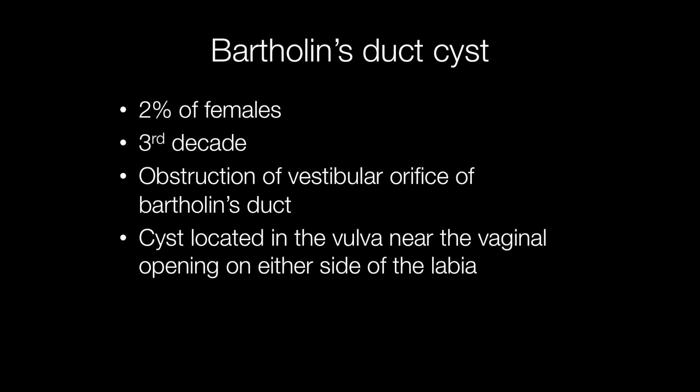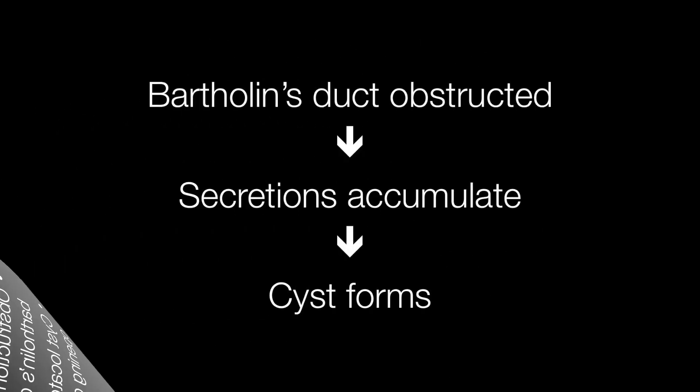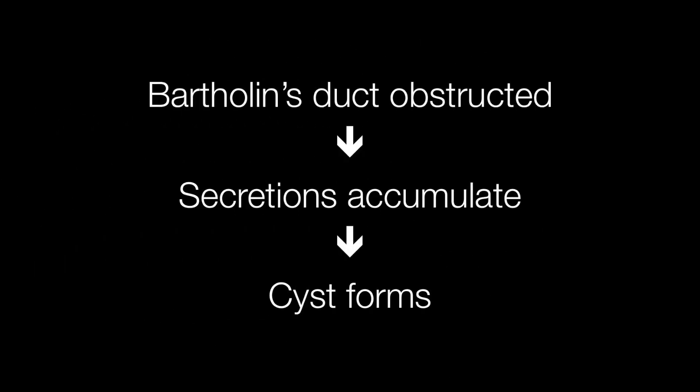Bartholin duct cysts affect approximately 2% of females, usually in their third decade, that is the 20s. They are caused by obstruction of the vestibular orifice of the Bartholin's duct, and the cyst is located in the vulva near the vaginal opening on either side of the labia. The Bartholin duct becomes obstructed, secretions accumulate, and a cyst forms.